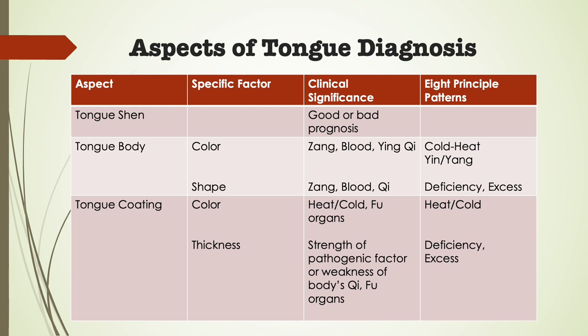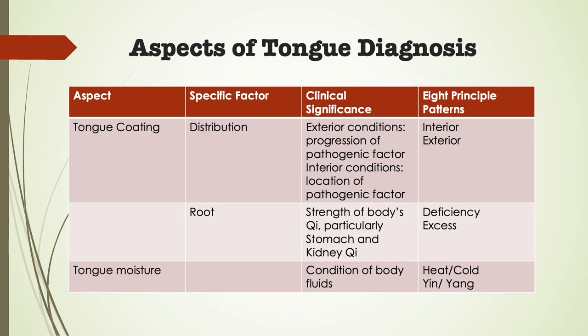The tongue coating can be used to rapidly differentiate the eight principles. Observation of the tongue coating is particularly relevant in acute conditions because the coating is the aspect of the tongue quickest to change — it can change by the hour. In an acute invasion of pathogenic factor, it is sometimes possible to observe changes in the coating in the front third of the tongue, especially the outer edge. If pathogenic factor penetrates deeper into the body, the coating will become thicker in central areas and possibly change color and consistency. Food stagnation will also manifest with changes in the tongue coating relatively quickly. A general rule of thumb: the thicker the coating, the stronger the pathogenic factor.